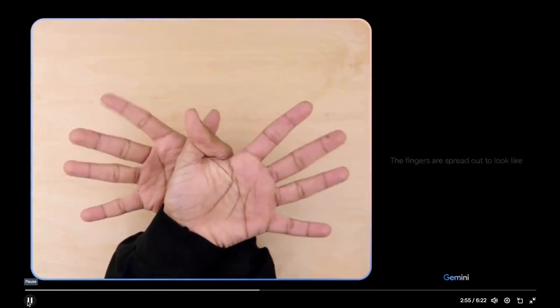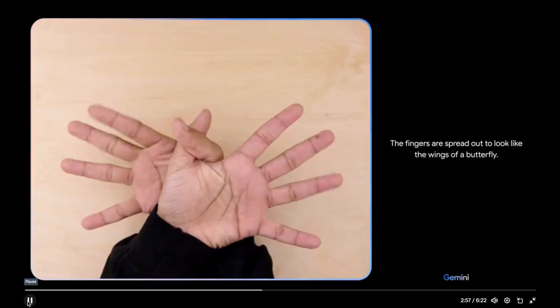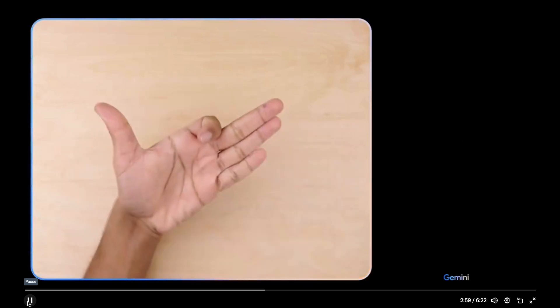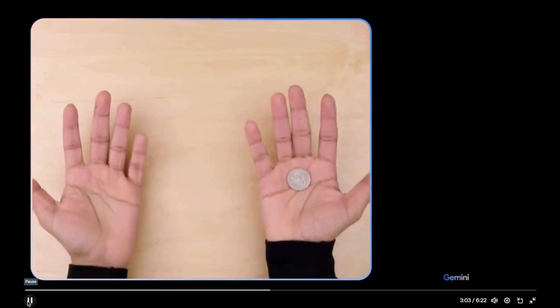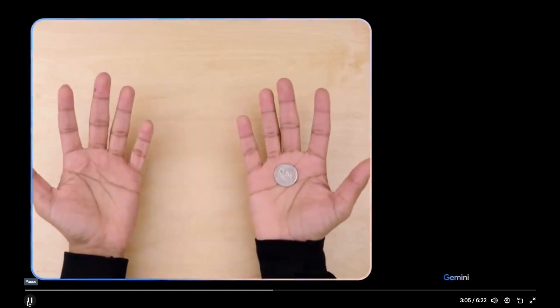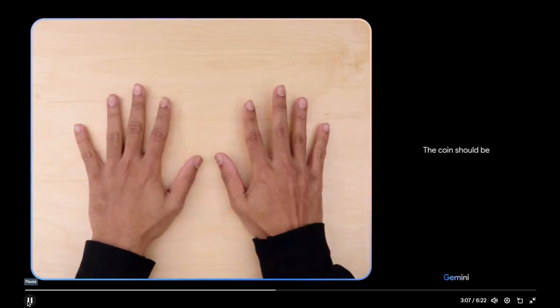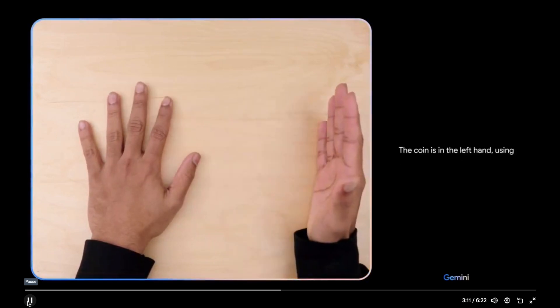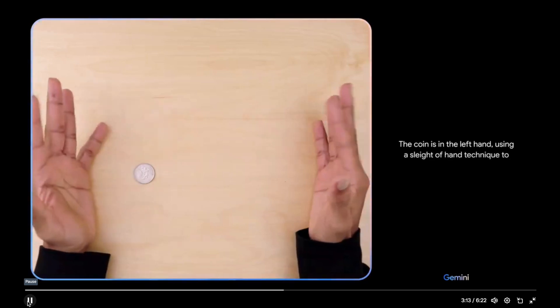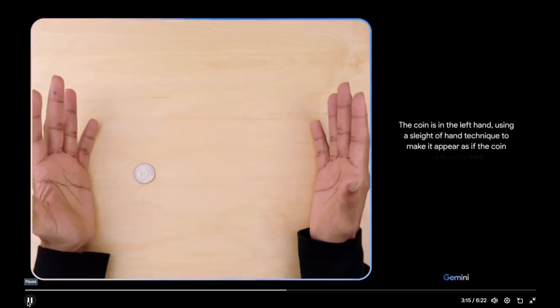What do you see now? The fingers are spread out to look like the wings of a butterfly. What's this? Big ear and barking mouth. A dog. Sweet. The coin should be under the right hand. I don't know. The coin is in the left hand using a sleight of hand technique to make it appear as if the coin has disappeared.